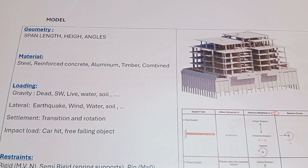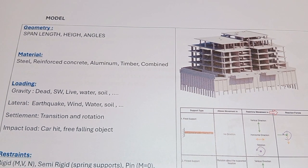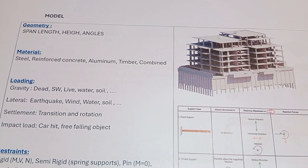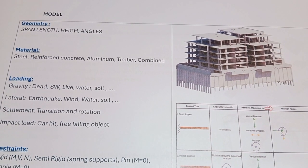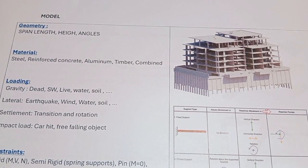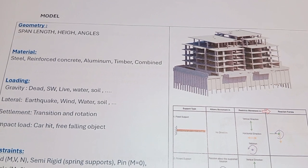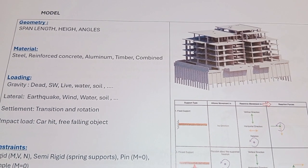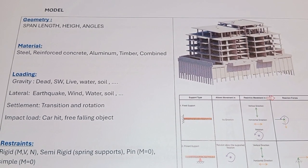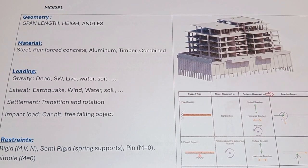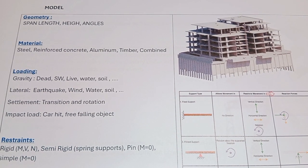In every structural analysis and design, we have three steps. The first step is modeling. Modeling means you need to understand the geometry of the structure, what the material is, what type of loadings will be applied, and what are the restraints.